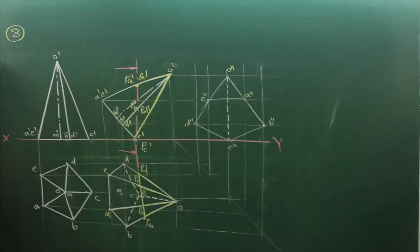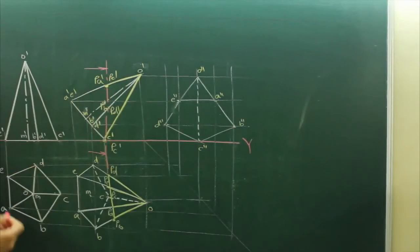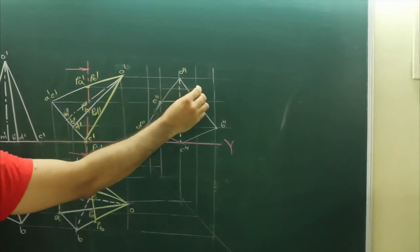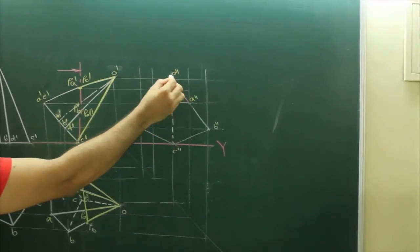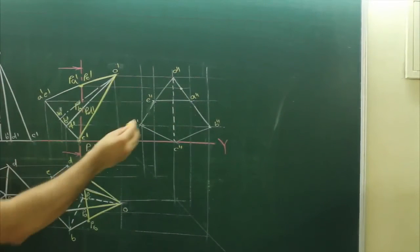TSS will be seen in side view because this cutting plane line is straight in front view. So now we will project from PA' to PE' wherever it will cut O' and A', so that point would be PE'.